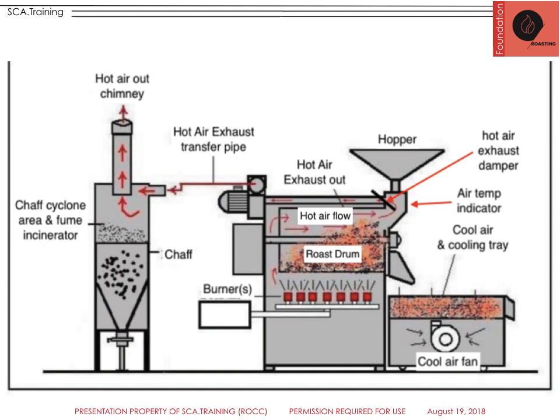When the hot air comes out of the roaster through the exhaust, it may be piped directly depending on your location or machine, and it may also be piped into an afterburner. The afterburner includes a chaff cyclone area and a fume incinerator to ensure safety and clean up the chaff, clean the air, and clean the smoke. The chaff will be collected down below and should be emptied — that's part of daily cleaning maintenance. Then the hot air escapes out of a chimney.